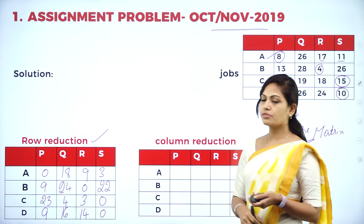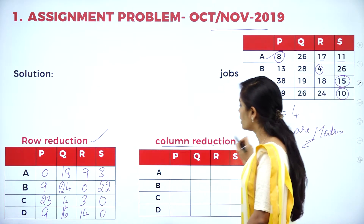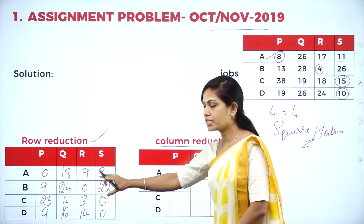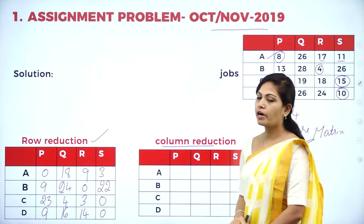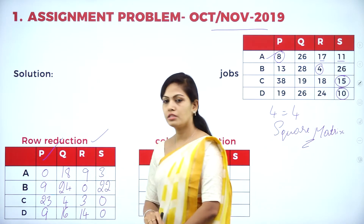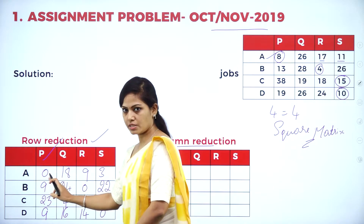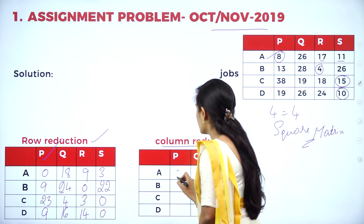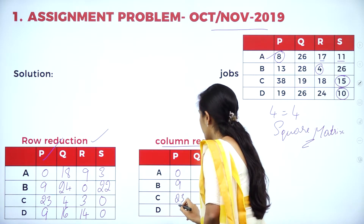The next step is column reduction. Using the row reduction matrix values, we can find the column reduction values. Consider column 1: the least value is 0, so subtracting 0 gives the same values — 0, 9, 23, and 9.